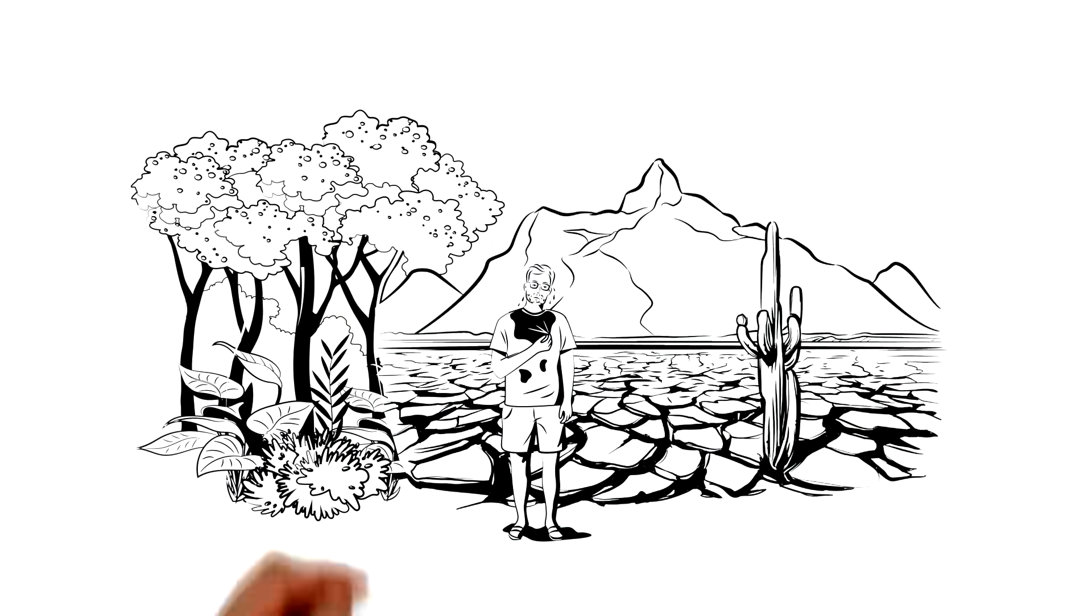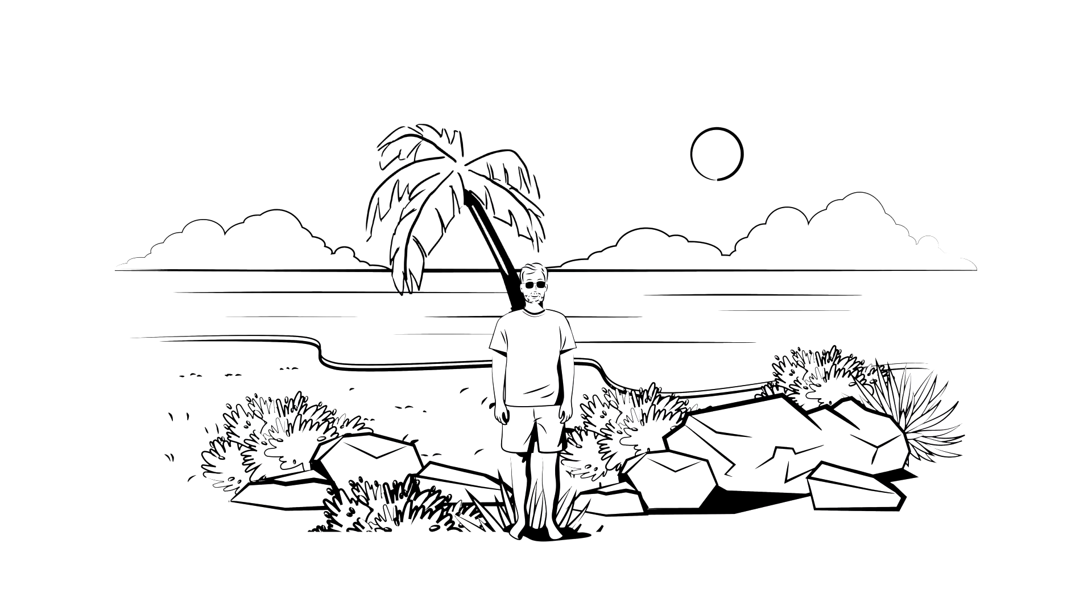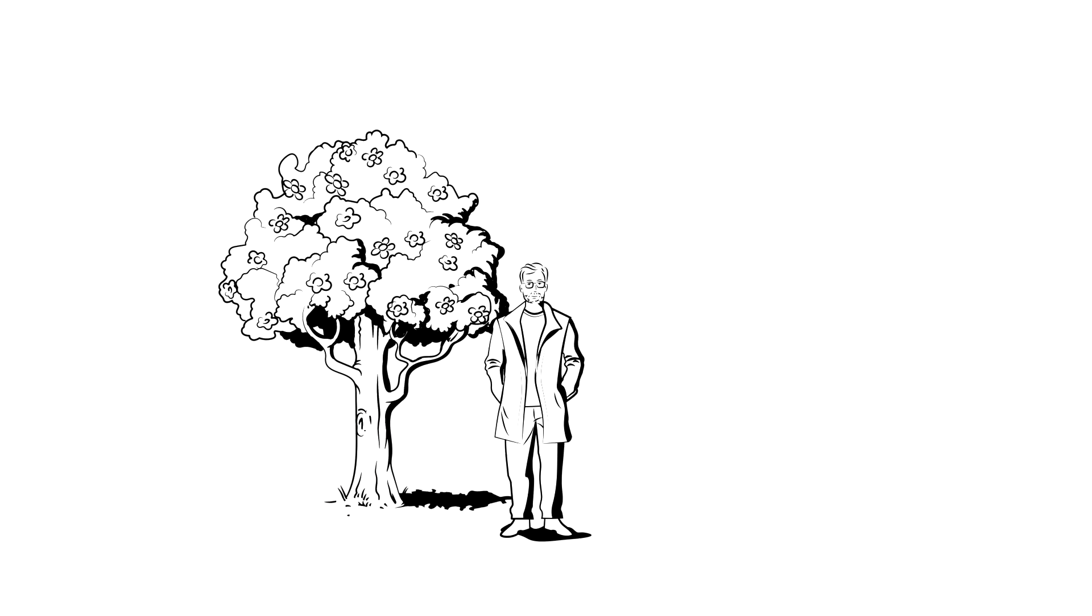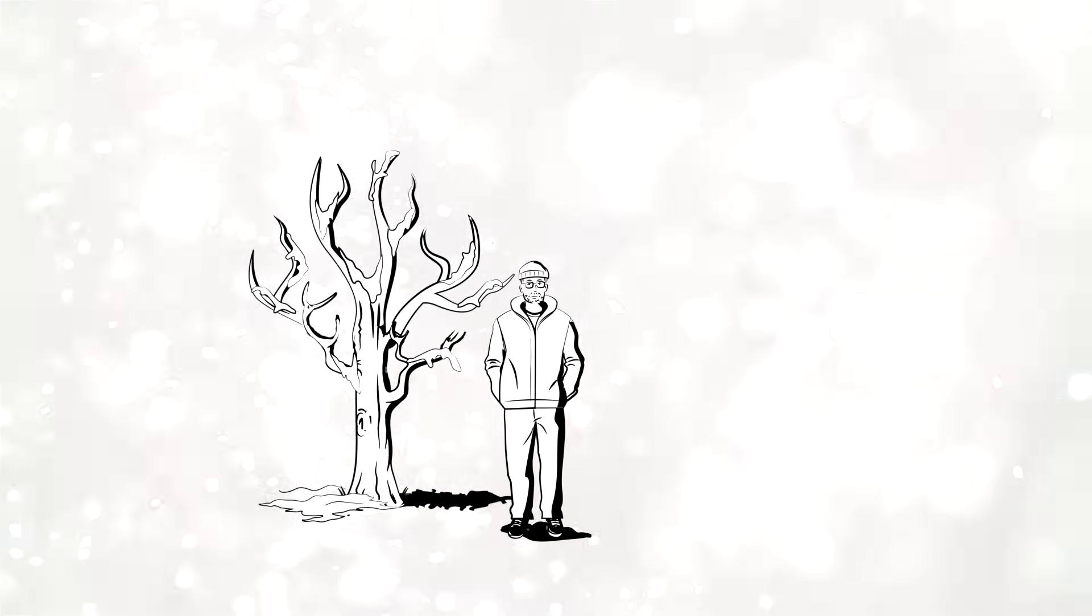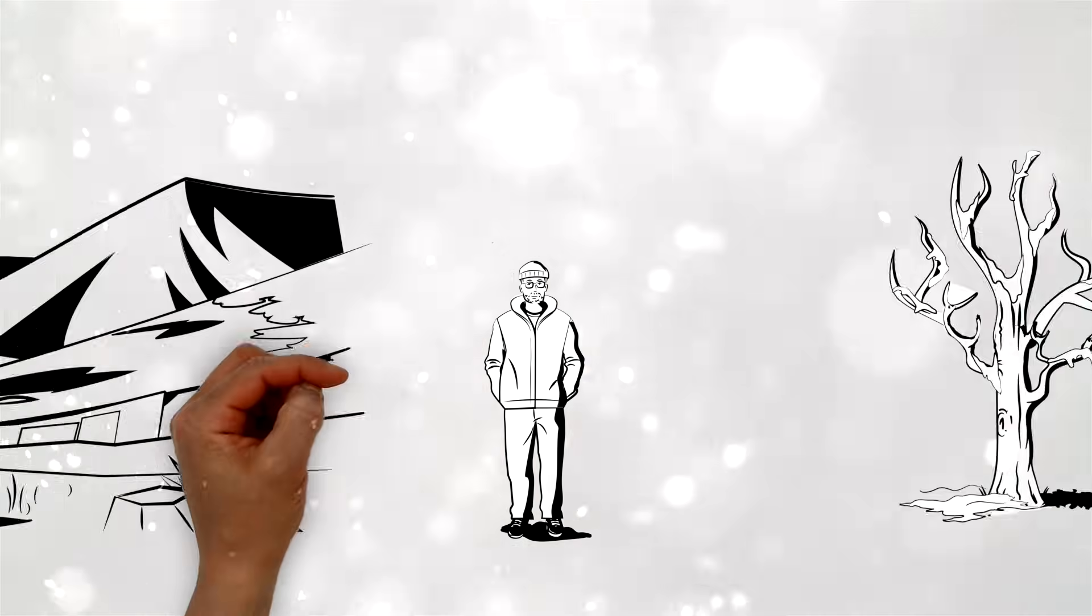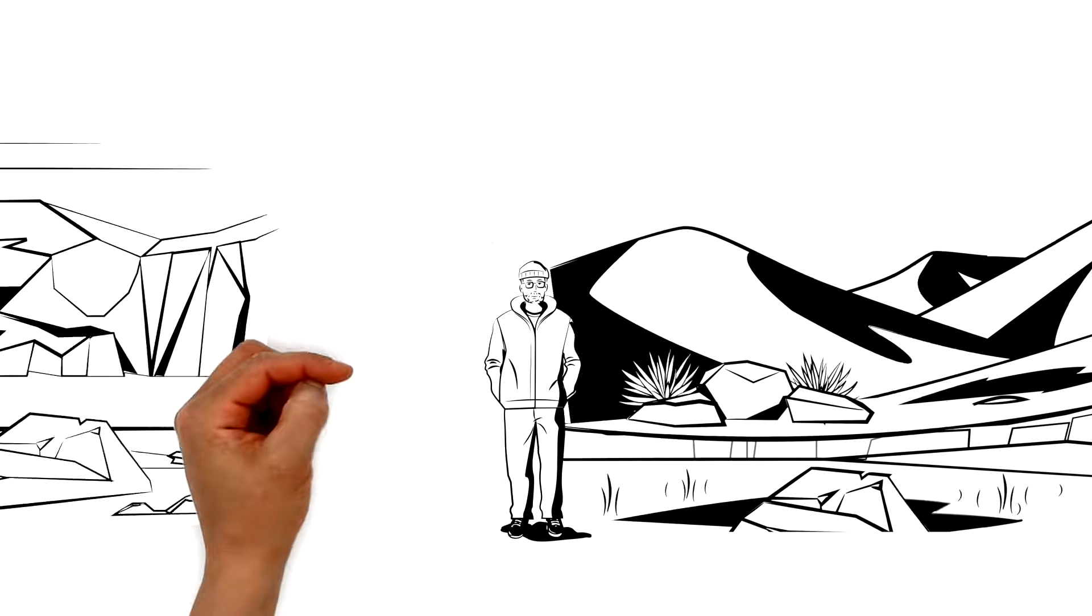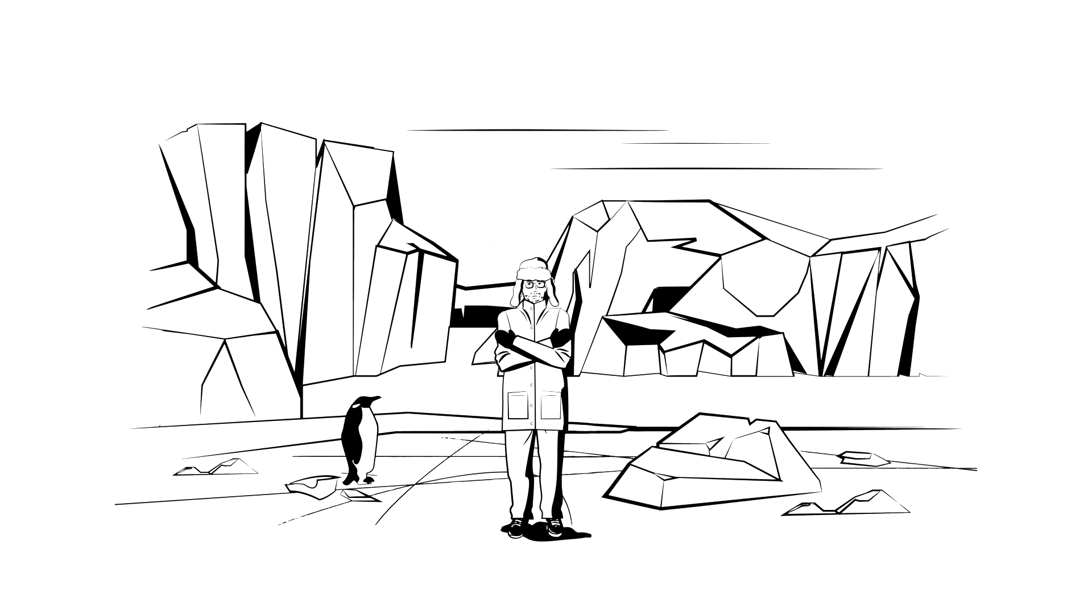Heat around the equator, hot summers in the Mediterranean, spring, summer, fall and winter in New York, snowstorms in Greenland, and icy temperatures at the South Pole.